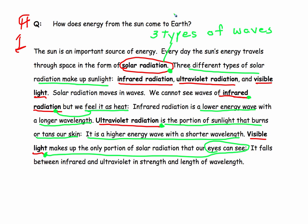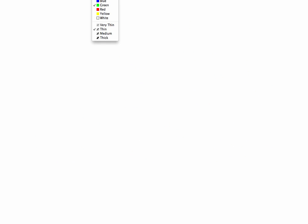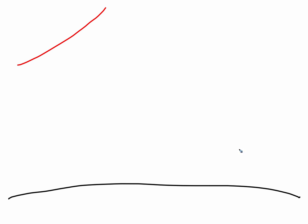So let's take a look at what this actually looks like in a sketch. So we have the Sun. And we have the surface of the Earth. And we have three different types of solar radiation. Three different wavelengths.